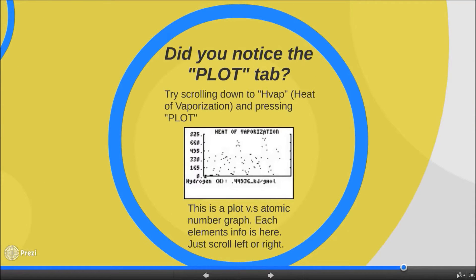Did you notice the plot tab? Try scrolling down. Press Plot. Each element's info is here. Just scroll left or right to see them.